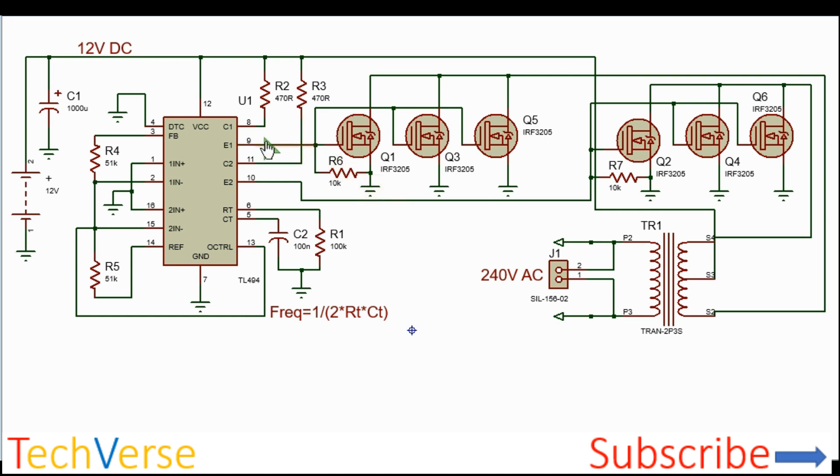So when the emitter E9 is high, Q1, Q3 and Q5 will conduct and this will allow current flow from 12 volts through this primary winding all the way to ground.